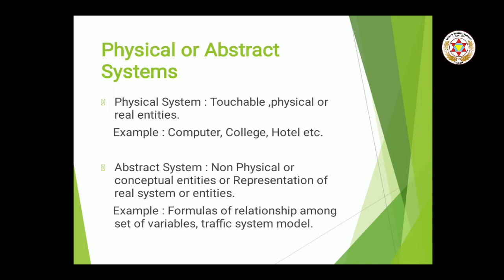Next we have physical or abstract system. Physical system means the system which we can touch, the system which is physically present. Jaise aapka computer system hota hai — physically present hota hai, dikhta hai, hum usko chhu sakte hain. College, hotel — ye sab physical systems hain.